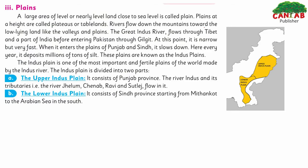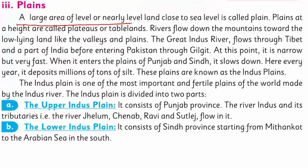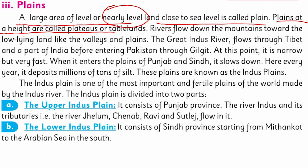The next region is the plains. Plains are areas at the same level as the surface of the earth. A large area whose level is nearly close to sea level is called a plain. Plains at a height are called plateaus or table lands — meaning plateaus are also flat and level but are above sea level.